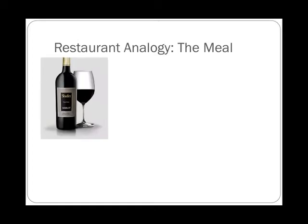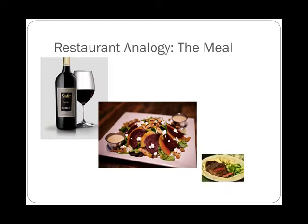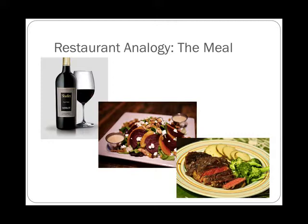So once you've given your order to the server, she or he will go back and start working it out. First will come your Merlot and then your beet salad and then your steak. And hopefully, since those are the things that you ordered, those should be the things that come out. We ordered our beet salad with sauce on the side — there it is, the little ramekins with the sauce on the side. We ordered our steak medium rare — there it is, medium rare. We asked for the Merlot, and they all came out in the right order. If these things don't come out right, we have a major problem.